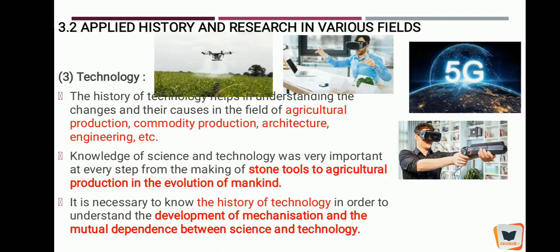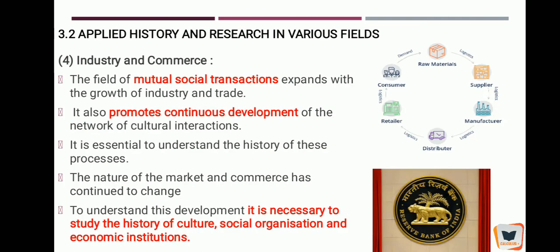Humein history pata hogi, tabhi mechanization ka development samajh mein aayega — kyunki har cheez mein transition aur evolution hota hai. Agar humein past events pata hoon, to future events aasani se tackle kar sakte hain. For example, coronavirus ek prakar ka virus hai. Humein pata hai ki virus se kaise tackle karna hai, isliye vaccines bhi laaye gaye. This is how technology and applied history connect.